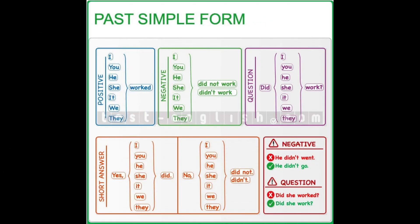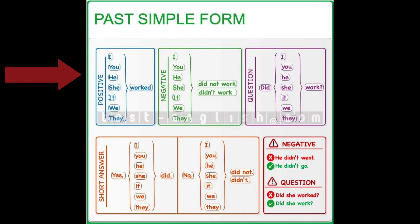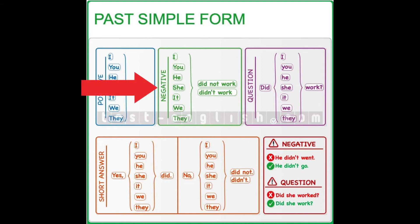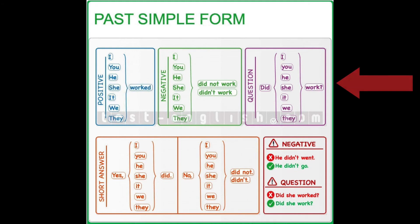For the Simple Past tense, in the positive form, we use subject and after that the past form of the verb. For the negative, we use an auxiliary and 'not.' And for the question form, we invert the place of auxiliary and subject.